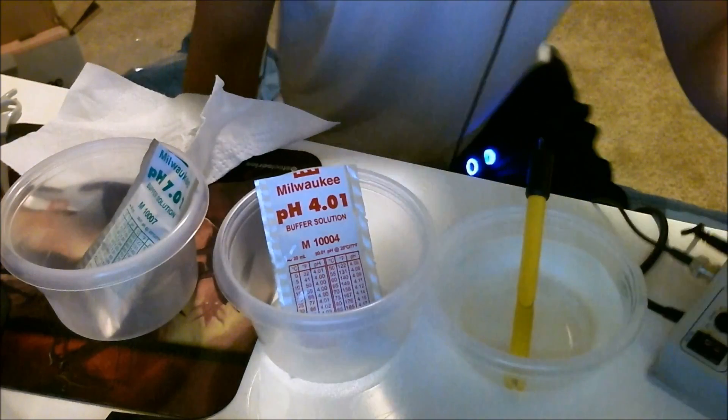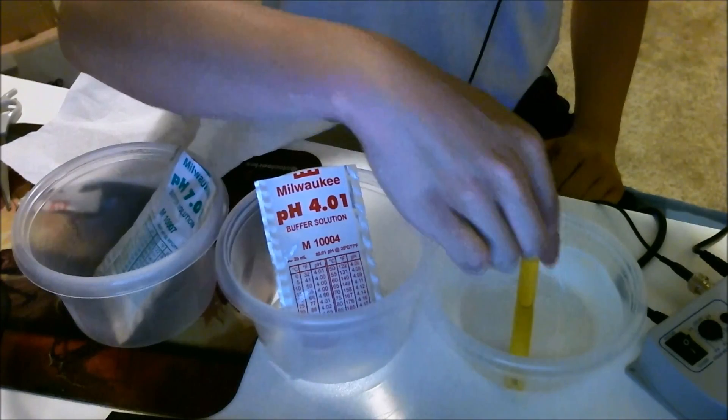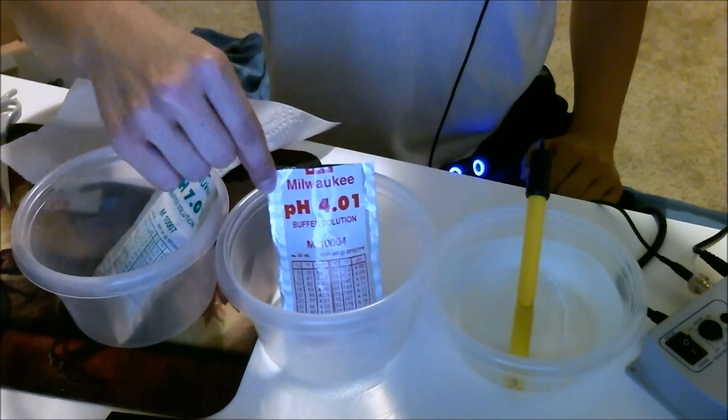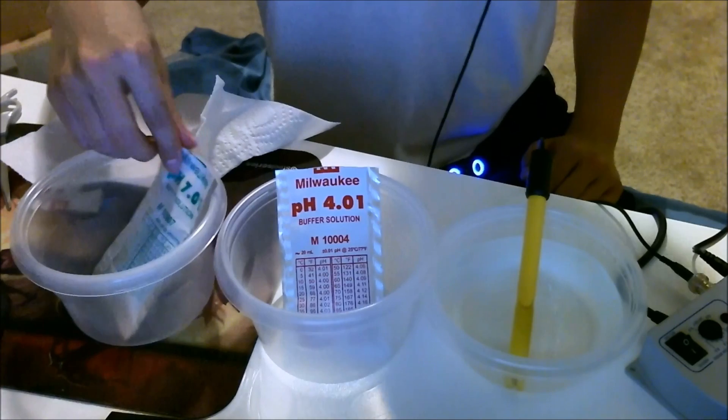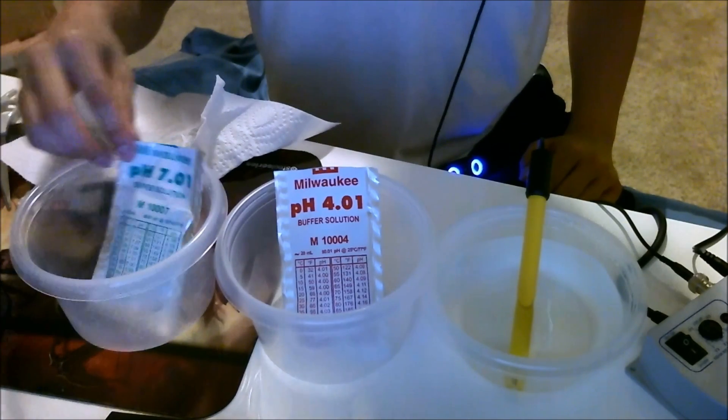Here I have three tubs: this is just regular tap water, this is the 4.0 solution that came with the controller, and the 7.0 solution that came with the controller.